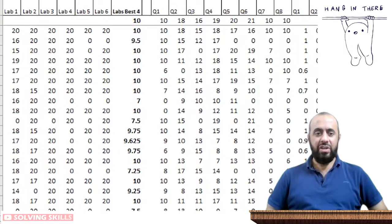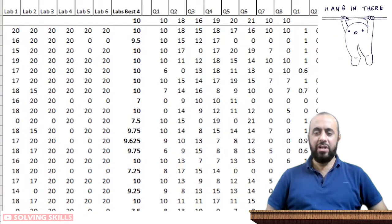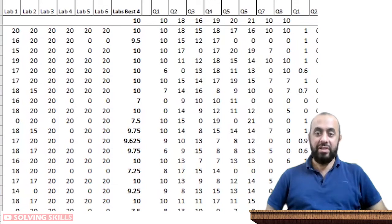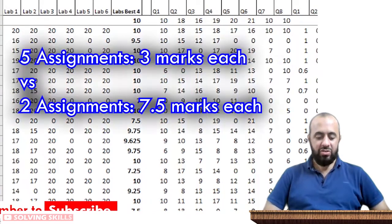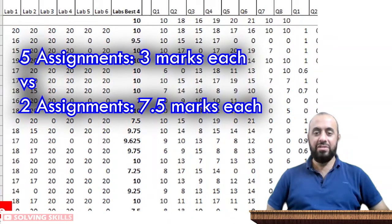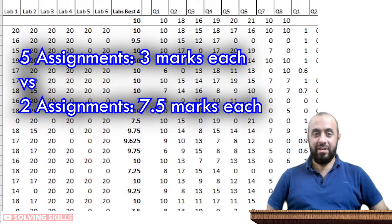You also need to understand what types of parts there are in each instrument. Sometimes the midterm or final exam is made up of multiple parts, and there will be multiple assignments. For example, if one professor gives five assignments and another gives only two, and the total assignment marks are 15 — in the first scheme each assignment carries 3 marks, but in the second scheme each carries 7.5 marks.